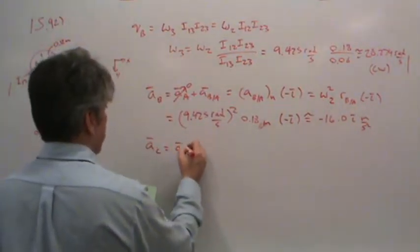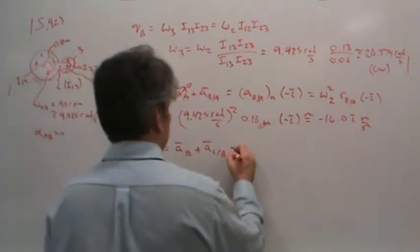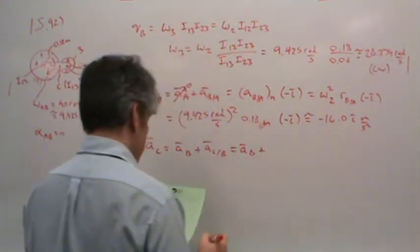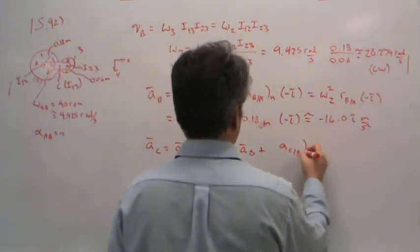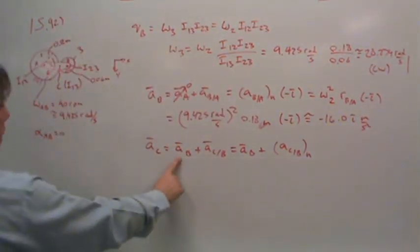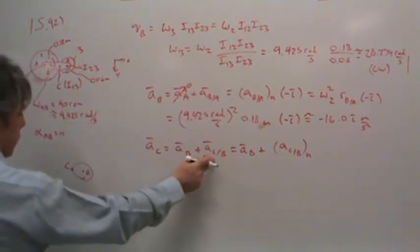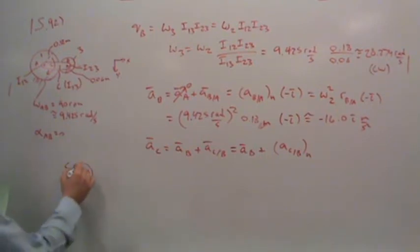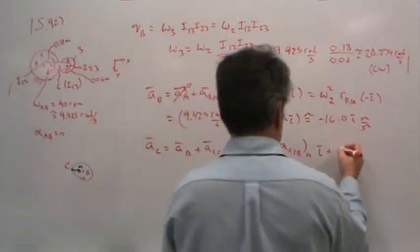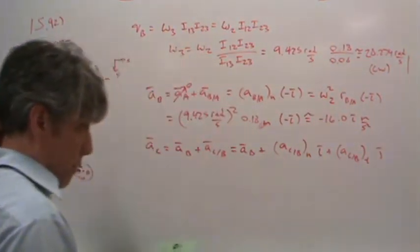So let's move from B to C. Acceleration of B plus the relative acceleration of C with respect to B. So now the acceleration of point B plus the acceleration of C with respect to B in the normal direction. Well, what are we doing? We're taking B as our reference. So if this is B, and we're interested in how C is moving as if B is sitting still, that's what we mean by this,